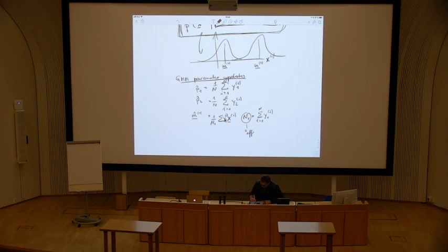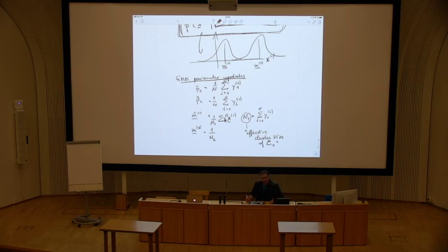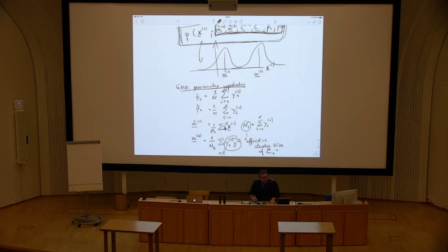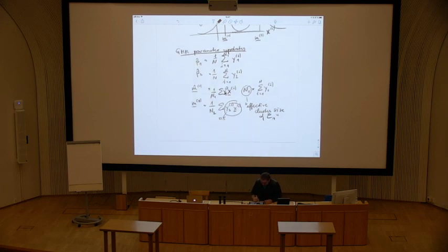You normalize not by the overall sample size but by the effective number of data points in cluster one, which is the sum of all degrees of belonging to cluster one over all data points — the effective cluster size. The same for mean vector two: normalize by the effective size of cluster two and take the weighted sample mean using degrees of belonging to cluster two. This ensures that if a data point belongs to cluster two only 50% (degree 0.5), it contributes with weight 0.5 to the mean. If the degree is zero, you don't include that data point at all for the cluster. Similar rules apply for the covariance matrix estimates.